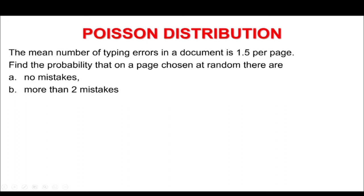The mean number of typing errors in a document is 1.5 per page. Find the probability that on a page chosen at random there are: (A) no mistakes, and (D) more than two mistakes. Since lambda is the mean per interval, our lambda = 1.5. For part A, the probability of getting no mistakes is P(x=0): 1.5^0 times e^(−1.5) all over 0 factorial.